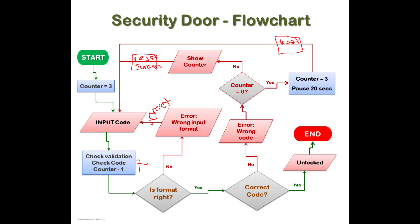If the format is right and the code is right, it shows a message saying it's unlocked. You can add a process box — a rectangle — saying 'unlock door', and then end the program. That's if everything checks out. On the other side, if you've entered the wrong code, it shows an error message and checks if the counter equals zero — yes, meaning your chances are over.